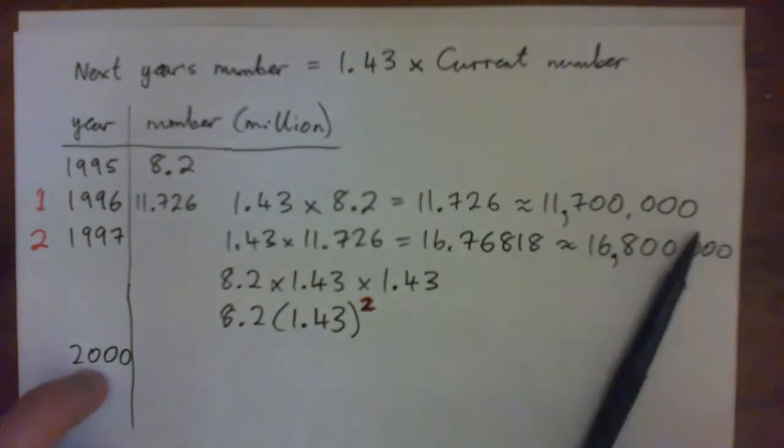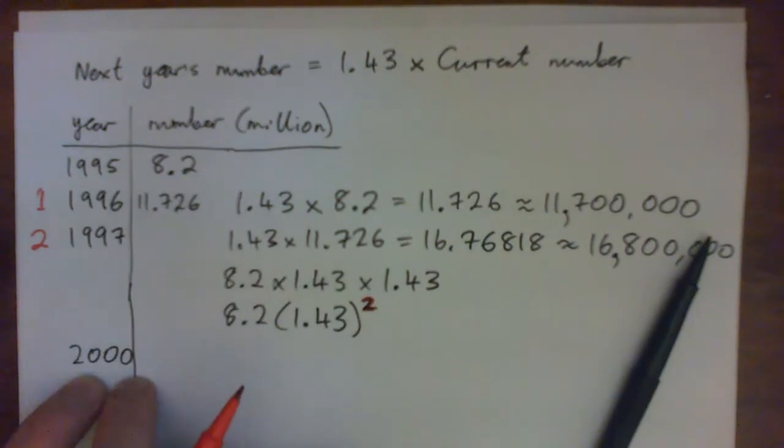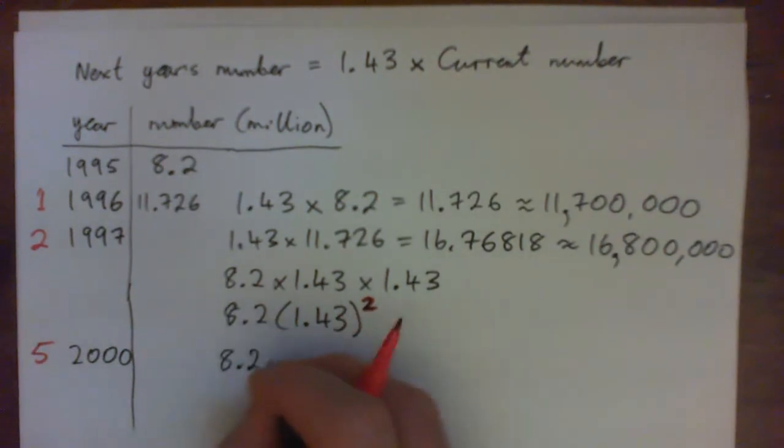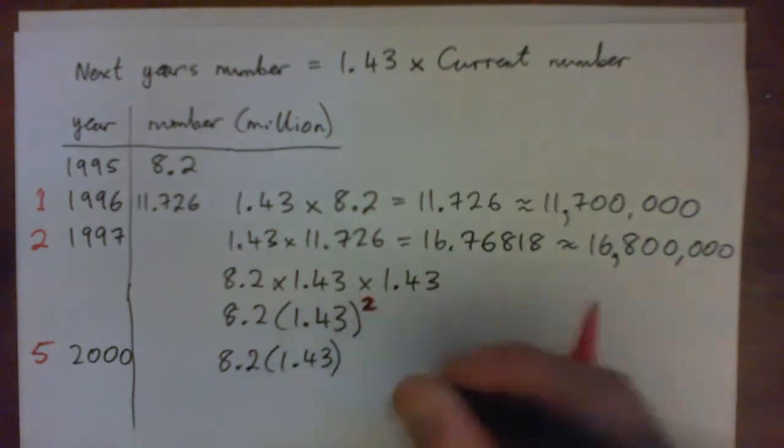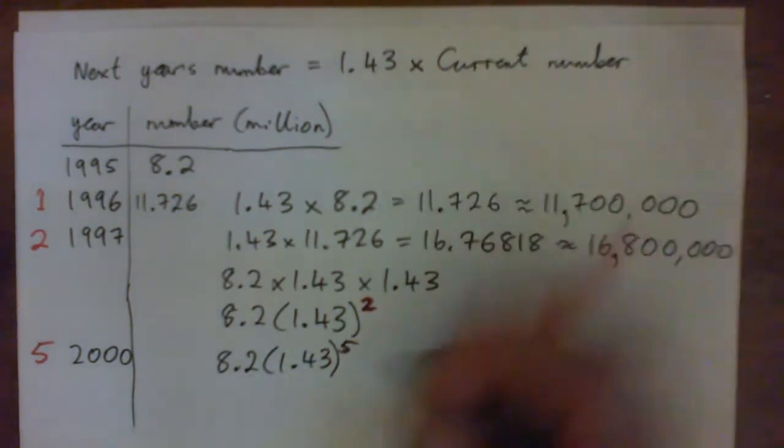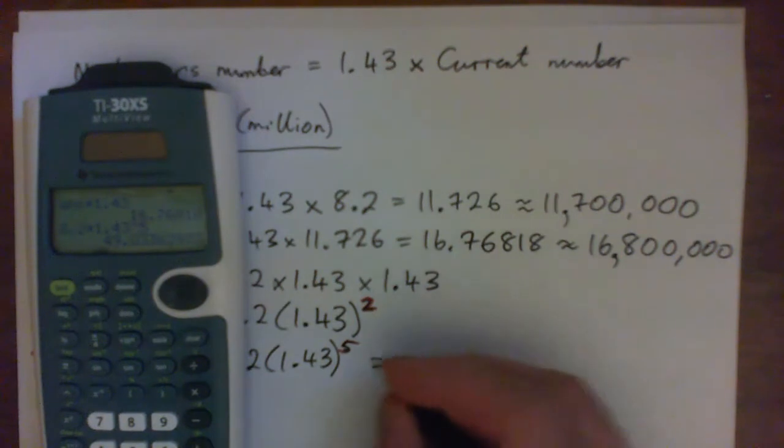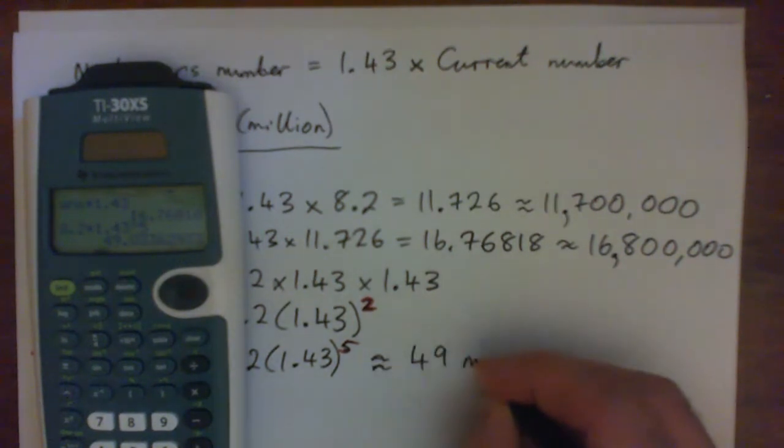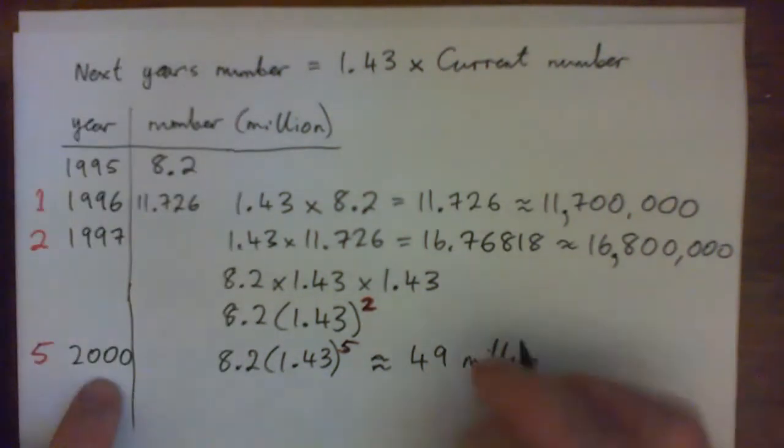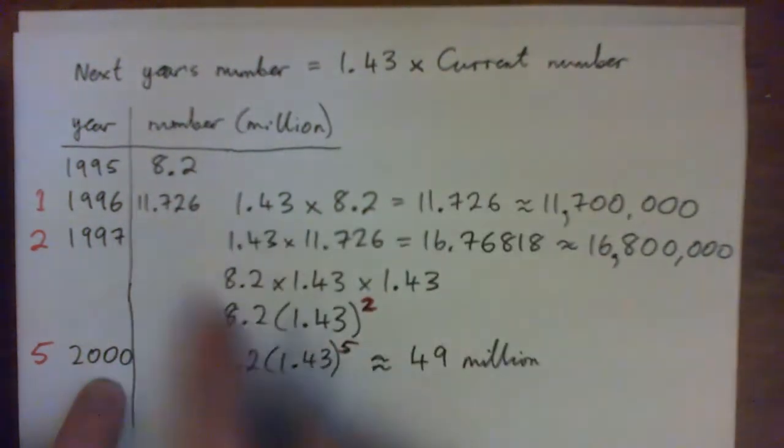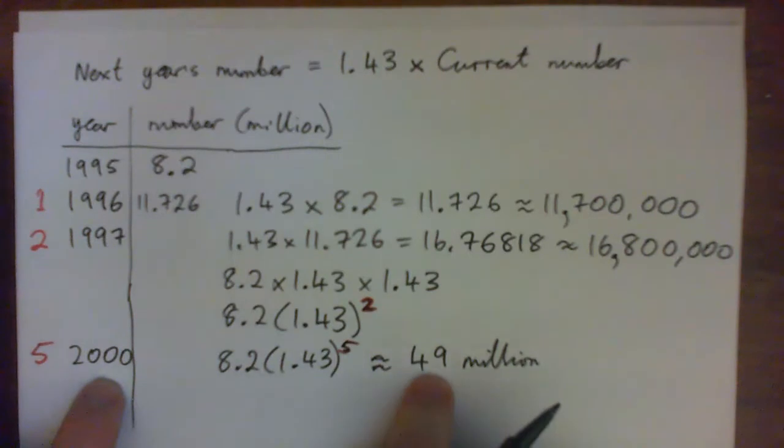Okay, if you need a hint, how many years past 95 is that? It's 5 years later, isn't it? So if I do 8.2 times 1.43 to the power of 5, that's going to give me the answer, isn't it? So watch, 8.2 times 1.43 to the power of 5, and that's 49.033, that's approximately 49 million, isn't it? So if this growth rate continues like this, by the year 2000, we'll have about 49 million domain hosts, right?